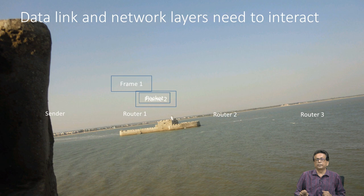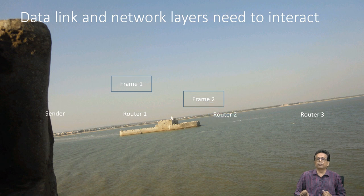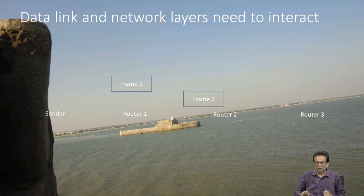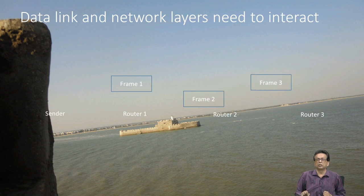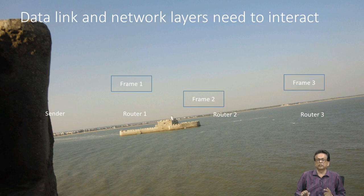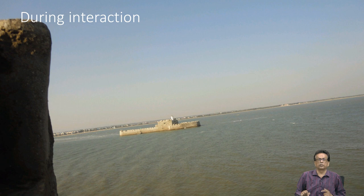Router 1 inserts that packet inside the second frame and it is carried across. Again, it is delivered — remember why this router takes the packet? It has to process it to figure out who the next receiver is. So, it delivers that packet through the third frame.